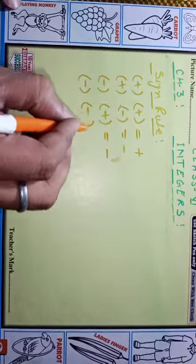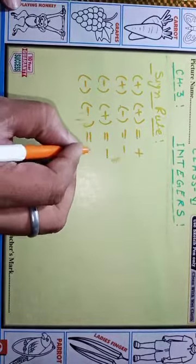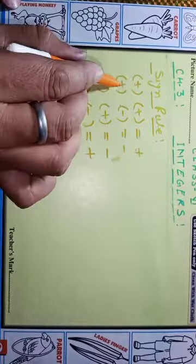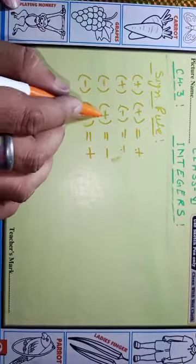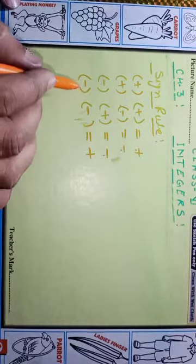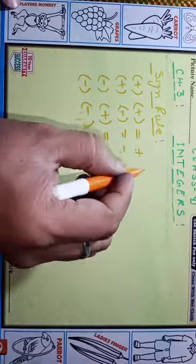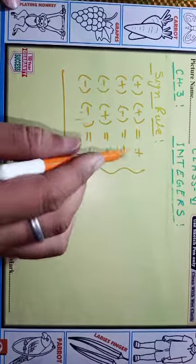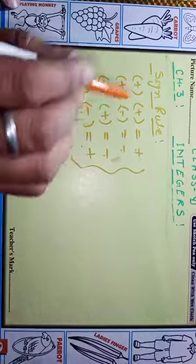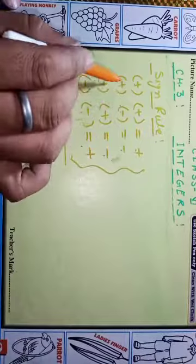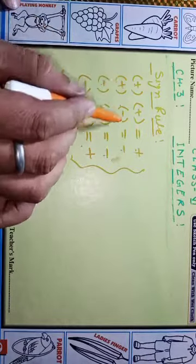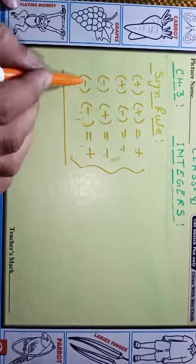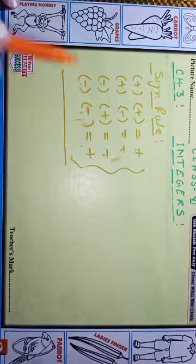And if both are minus and minus, that becomes plus. So the sign rule is: plus plus equals plus, plus minus equals minus, minus plus equals minus, minus minus equals plus. This is the sign rule — very important, learn it.